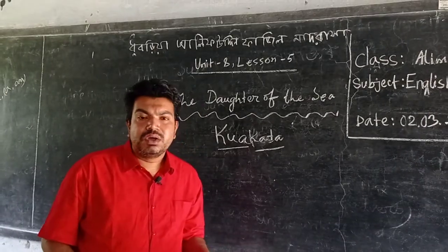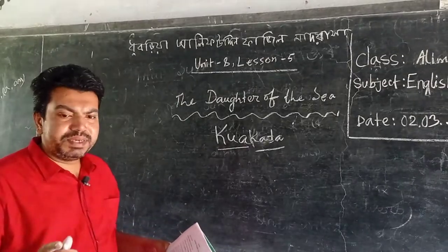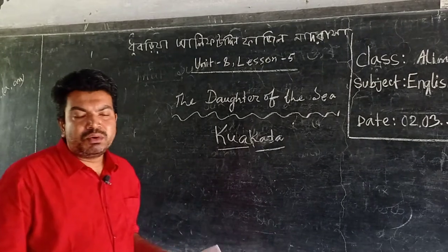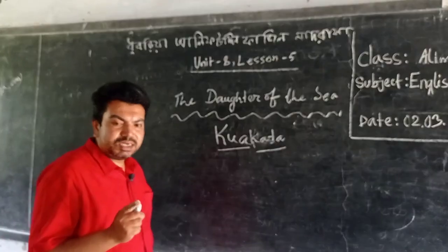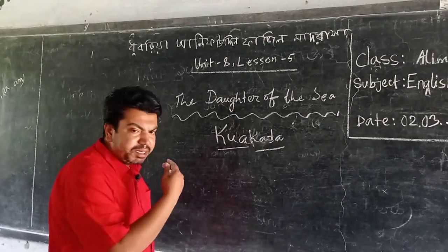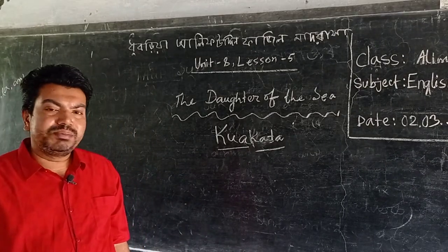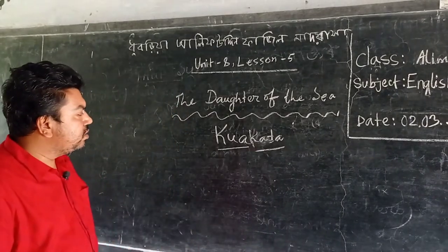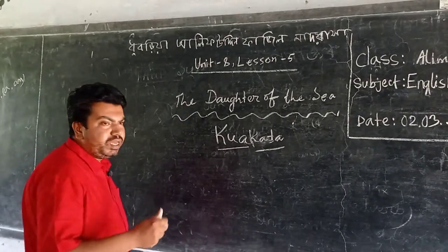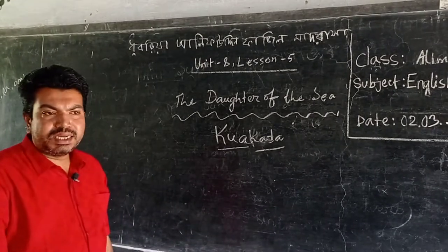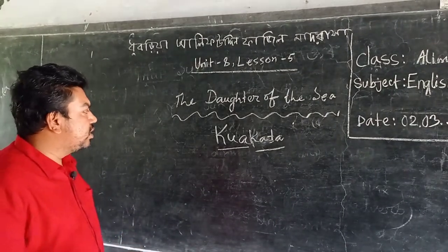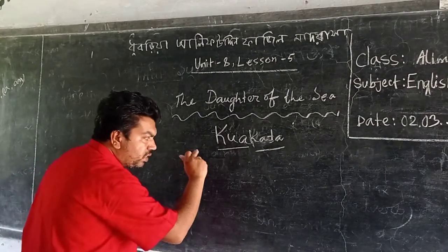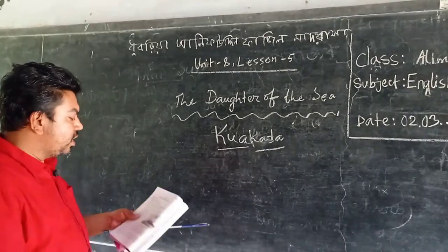Kuakata has special significance among our sea beaches. In Kuakata, we can enjoy both sunrise and sunset from the sea beach. In Cox's Bazar, we can see only the scene of sunrise, but we cannot see the scene of sunset. In Kuakata, we are able to see both the scene of sunset and sunrise — this is the significant importance of this place.